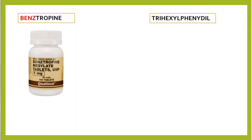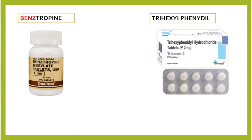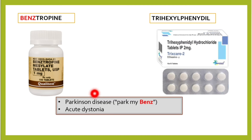Two other drugs worth mentioning are benztropine and trihexyphenidyl. These drugs can be used to treat Parkinson's disease and acute dystonia. We will discuss them later under anti-Parkinsonian drugs, but they belong to this group of m-cholinoblockers.